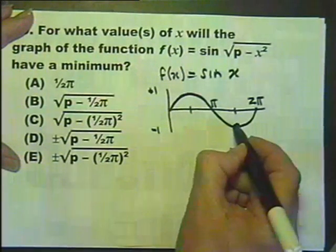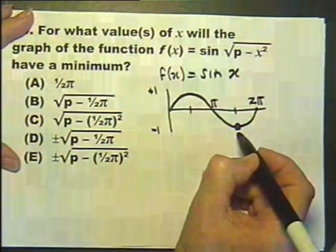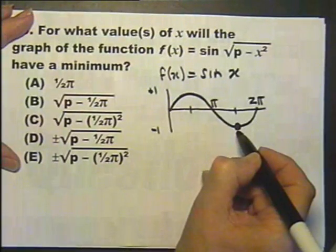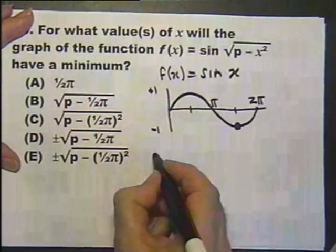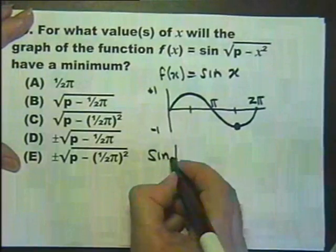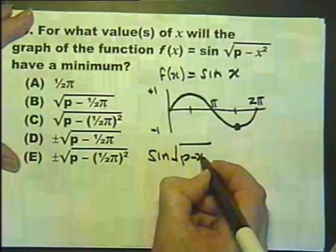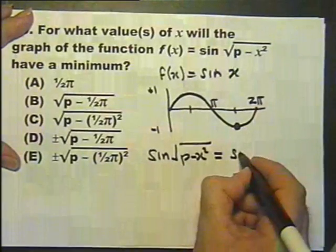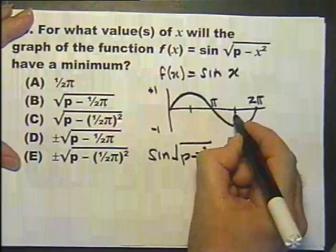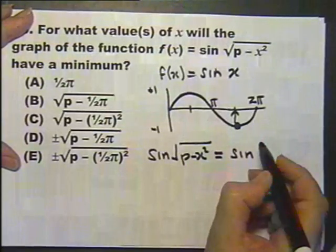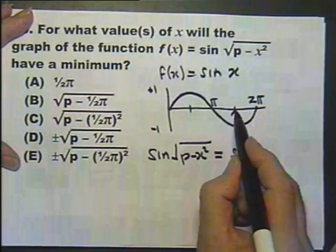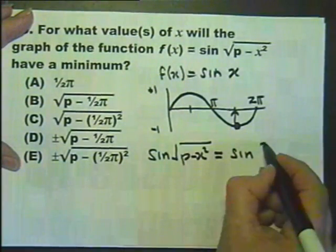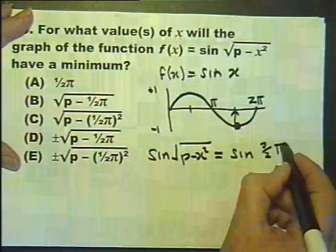And this is the minimum point. So that's what we're considering. So the maximum is when this actually equals this. That value there. And that value there is 3 over 2 pi.